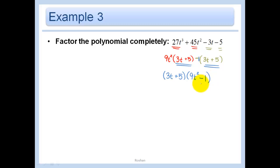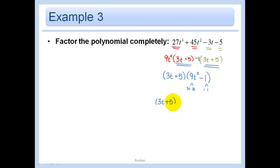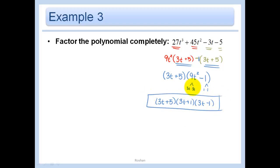Am I done? Not quite. Because isn't 9t² − 1 a difference of two squares? It's 3t times 3t, and 1 times 1, and it's the difference of those. So I can factor this further. Now I am done — I cannot go any further.